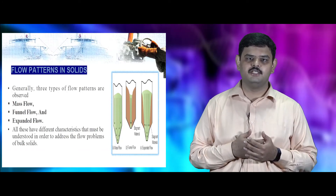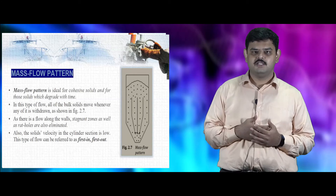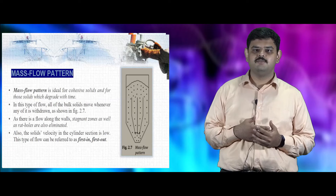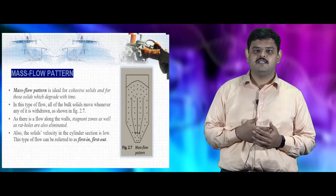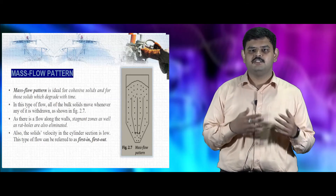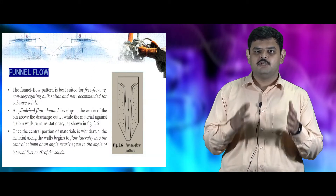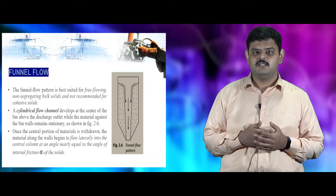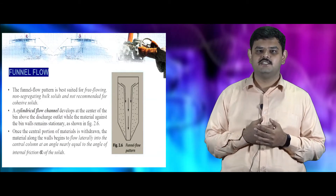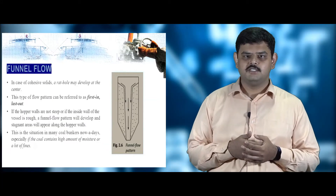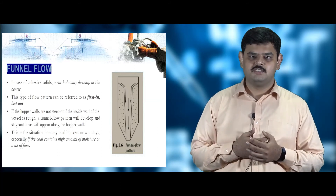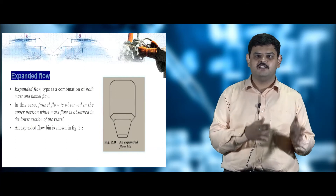Mass flow is ideal for cohesive solids and those that degrade with time. In this pattern, all bulk solids move together when any material is withdrawn. Since flow occurs along the sides of the container, stagnant zones and rat holes are eliminated. This is known as first-in, first-out. Funnel flow is suitable for free-flowing solids and is not recommended for cohesive solids. It occurs as a cylindrical flow in the cylindrical section above the discharge point. For cohesive solids, rat holes and stagnant sections develop — it is known as first-in, last-out.